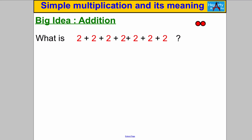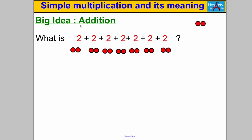I want to start off by thinking about 2 add 2 add 2 add 2 add 2 add 2 add 2. Let's represent that — here's a 2, and we're adding another 2, and another 2, and so on. We could count them up individually: 1, 2, 3, 4, 5, 6, 7, 8, 9, 10, 11, 12, 13, 14. So the answer to this problem is 14.